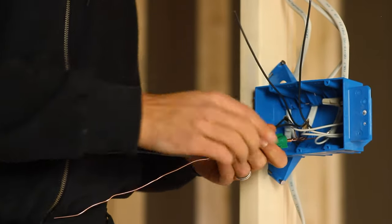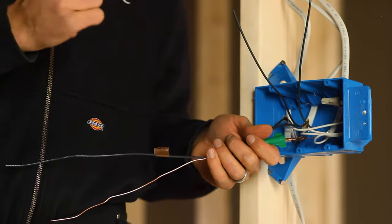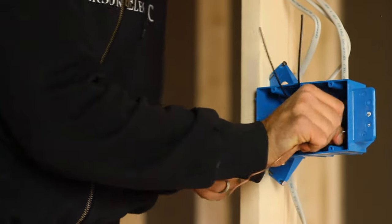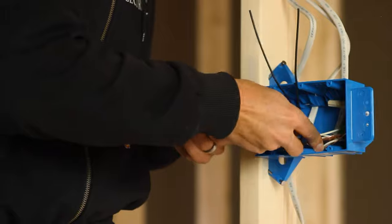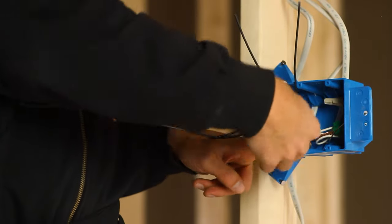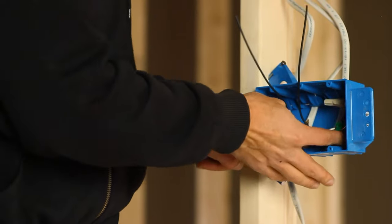Again, I'm going to tuck those neutrals, I'm now done with them, to the back of the box. I'm going to take my grounding conductor next, because I will come back to use this when I terminate my switches. I'm going to tuck it, not stuff it, to the back of the box.